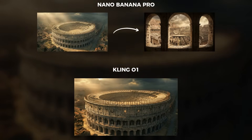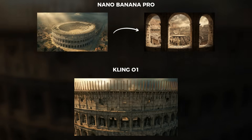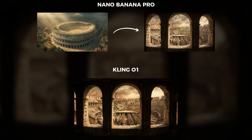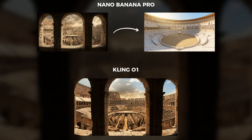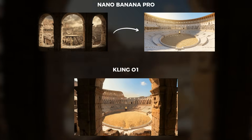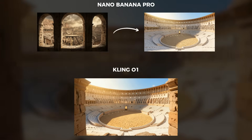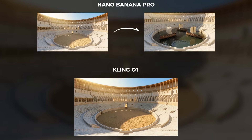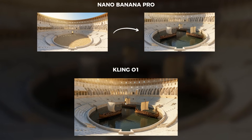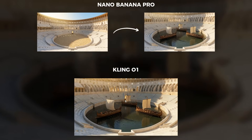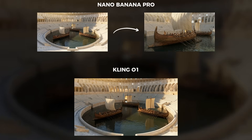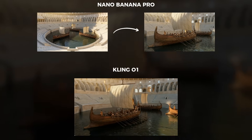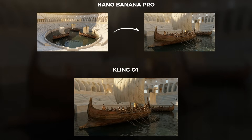An arena so vast its architects could command the sun itself. Its stones have witnessed the rise and fall of empires, but its greatest secret was not on the sand. With impossible ingenuity, the arena could become an ocean, staging epic naval battles for a captivated crowd.